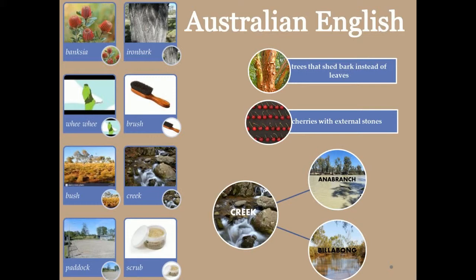The words brush, bush, creek, paddock, and scrub acquired wider senses. A creek leading out of a river and entering it again downstream was called an anastomosing branch, or an anabranch, whereas a creek coming to a dead end was called by its native name, a billabong.